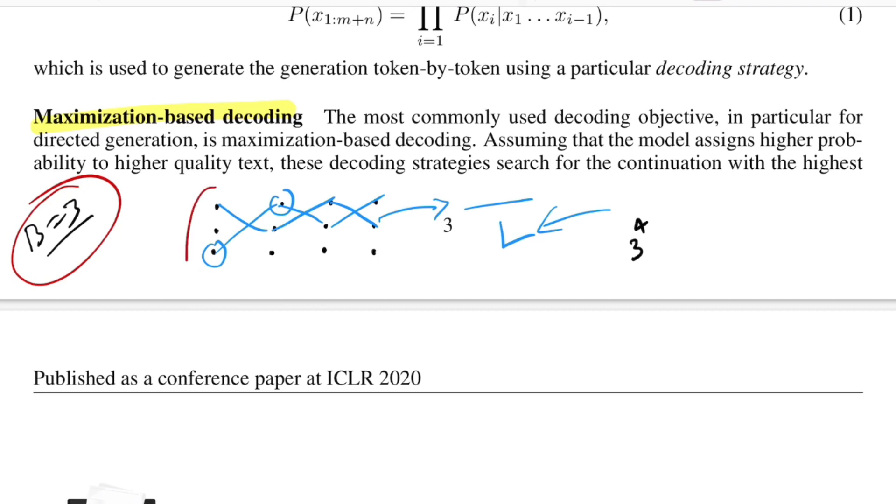In ideal scenario, you'd want the beam size to be the size of the vocabulary. But if V equals 10,000 and we generate four words, 10,000 power four is the number of sentences that we generate, which is a lot. This problem becomes intractable. So beam search plays some kind of an approximation to this.